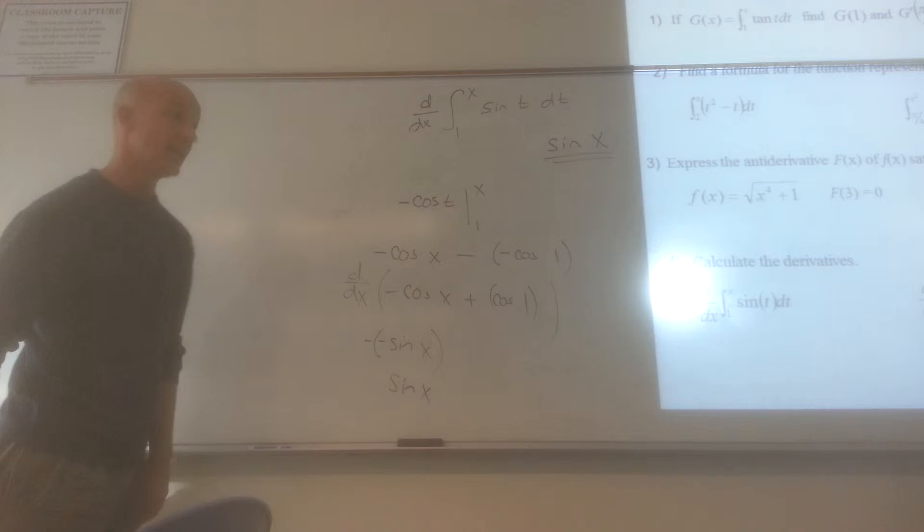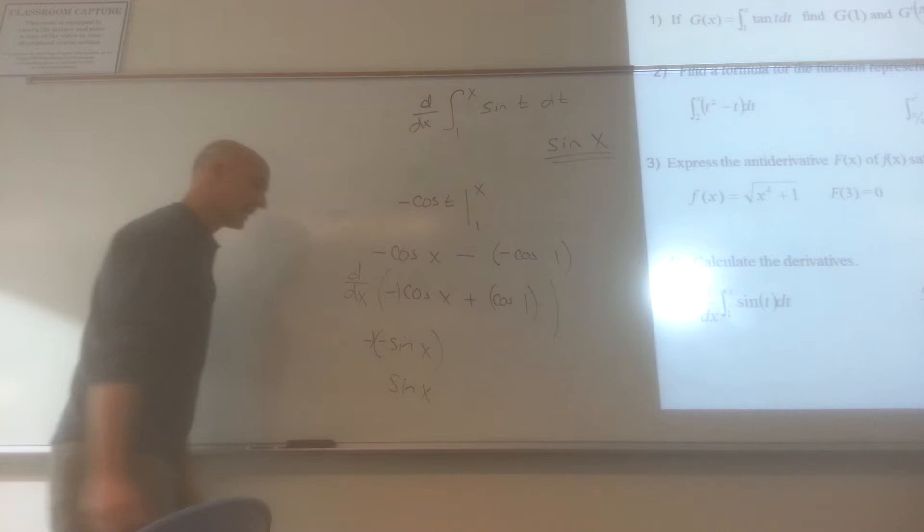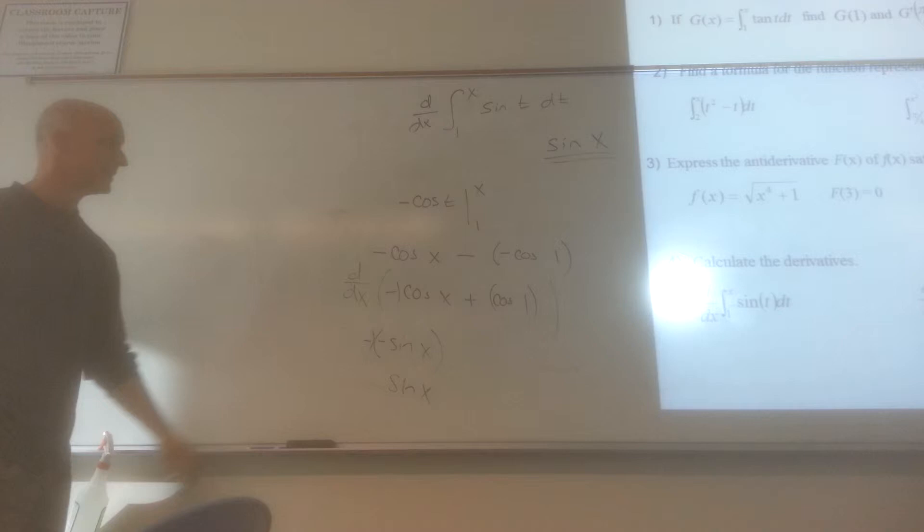Why did you get minus times a minus? Because this was the derivative of the cosine is the negative sine. But we're taking the derivative of the negative cosine. So if we treat that as like a negative 1, that negative 1 times a negative makes it a positive. Yeah, it's really easy to lose a negative number.